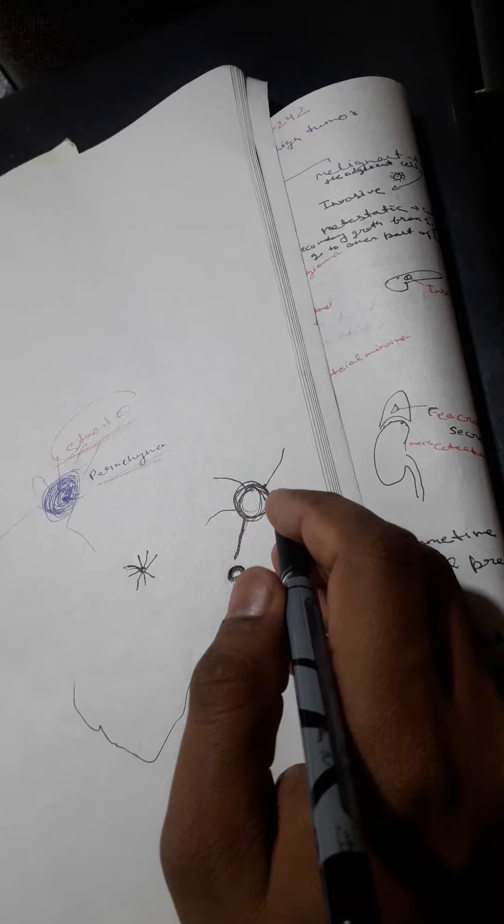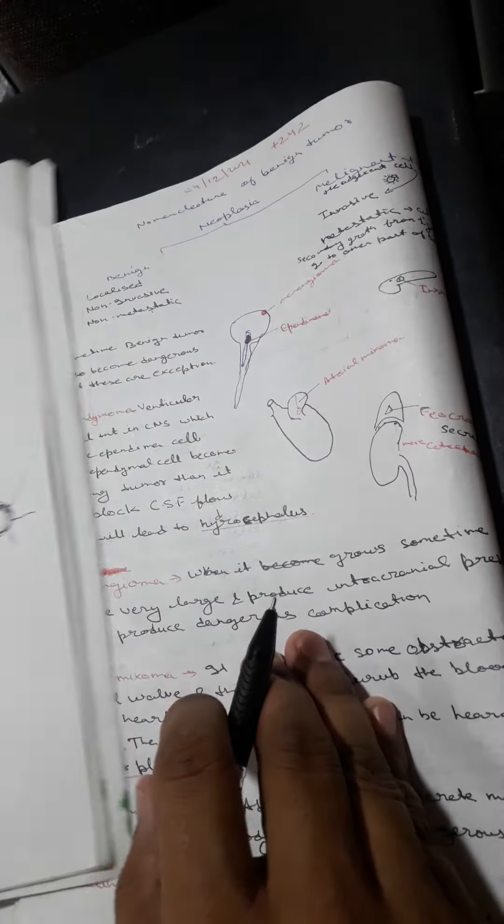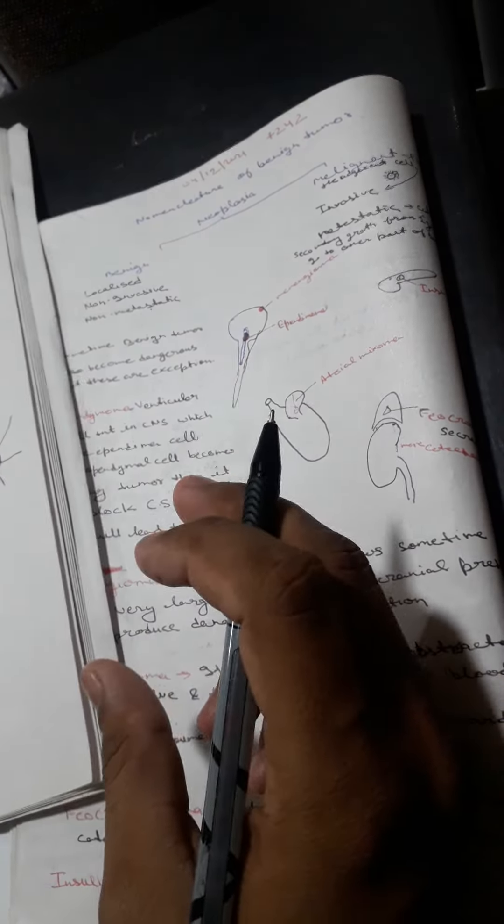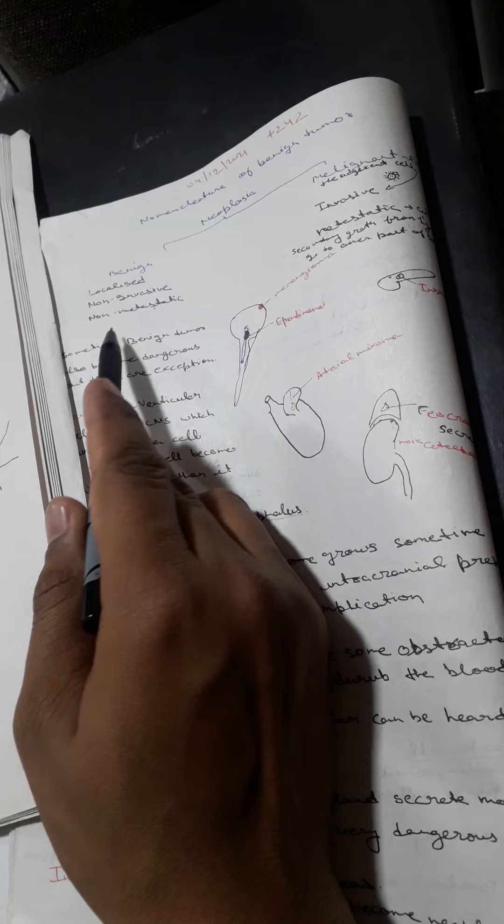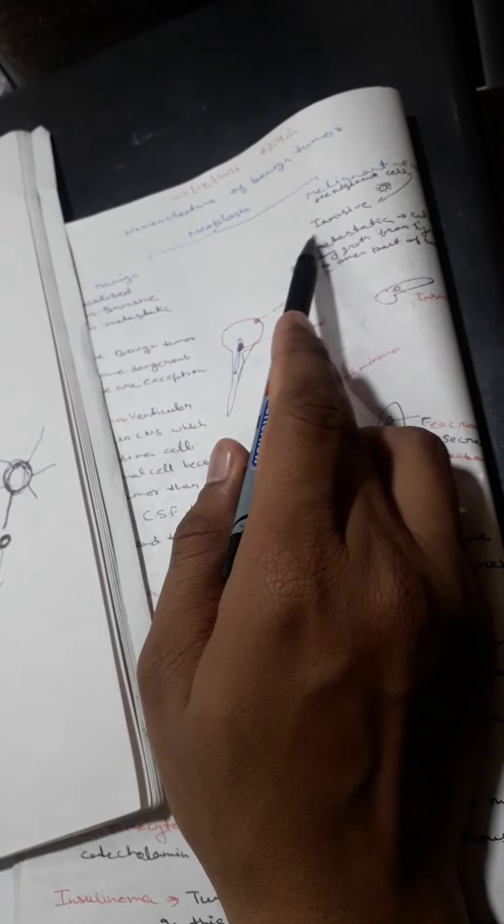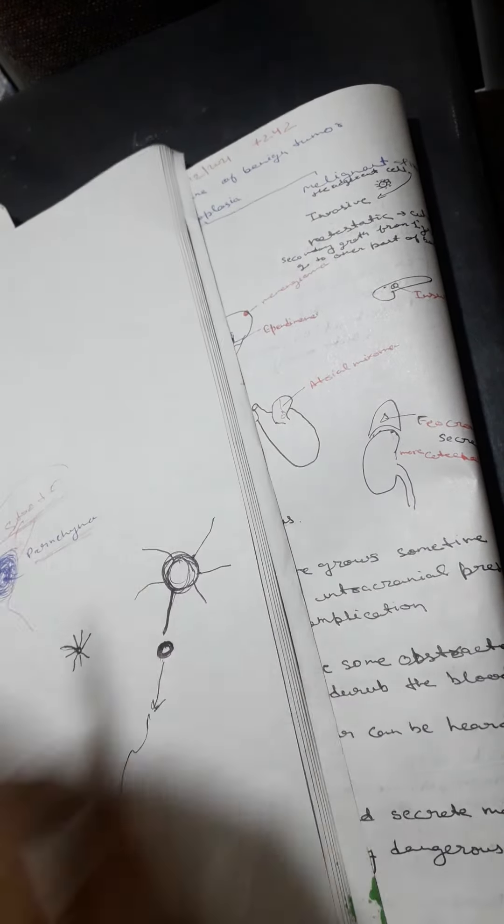So this is all about malignant and benign tumors. Benign tumors are localized, non-invasive, and non-metastatic. Malignant tumors are non-localized, invasive, and metastatic. Thank you.